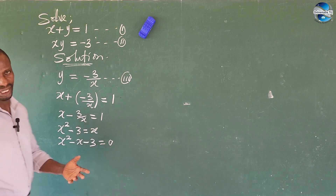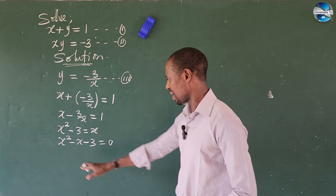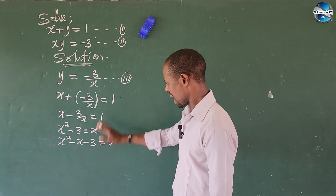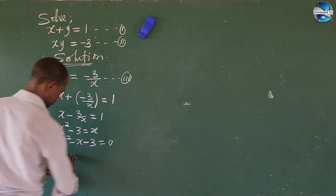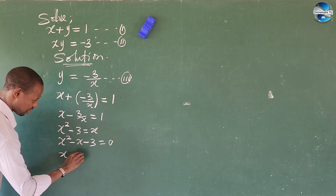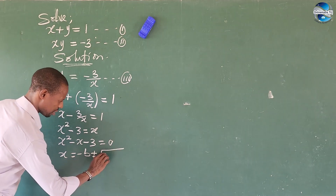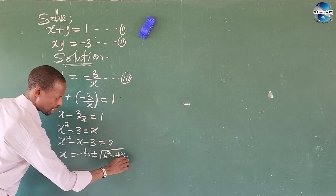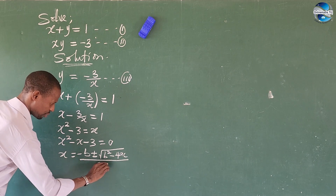Of course, this is a quadratic equation, so we solve this quadratically. Where our a is 1, b is minus 1, and c is minus 3. Using the quadratic formula, this gives us x equals minus b plus or minus the square root of b squared minus 4ac, all over 2a.